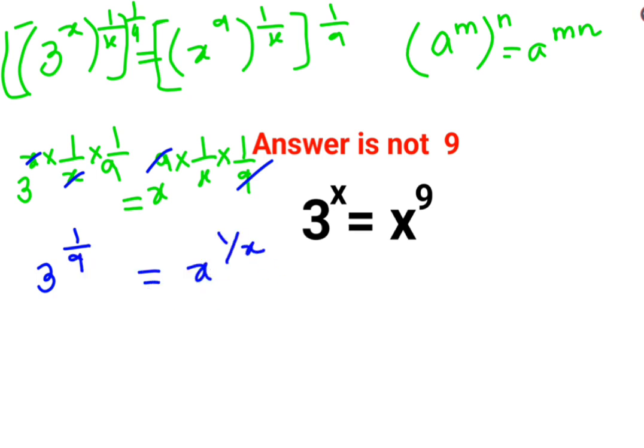Now if here also I had 3 or here I had 9 then in that case I could have directly said that the value of x is either 3 or 9. Now here if I can say that this is basically 1, so this 1 can be written as 3 upon 3.